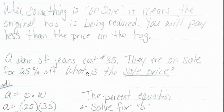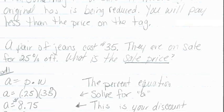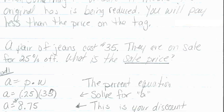We're going to set 25% as p and the cost of the jeans as w. So we're going to find the part that we're going to take off the jeans - how much are we going to save. If you grab your calculators and do 0.25 times 35, we get $8.75.